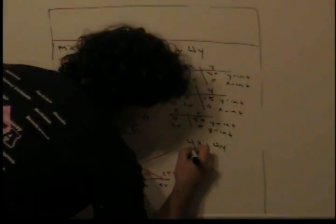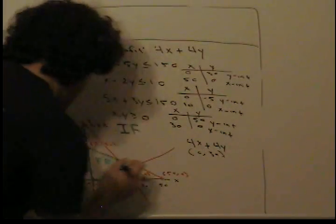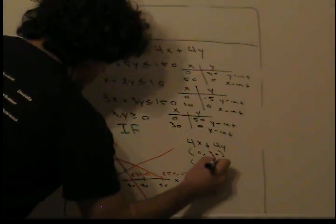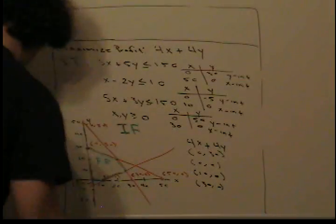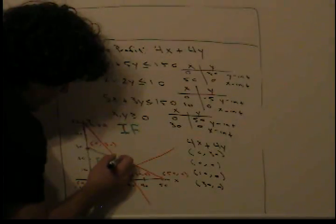Our first corner point is at (0, 30), right over here. Another corner point is at the origin (0, 0). Another corner point is at (10, 0), right over here. And another corner point is at (30, 0). We also have two corner points that lie at the intersection of linear graphs, over here and over here.